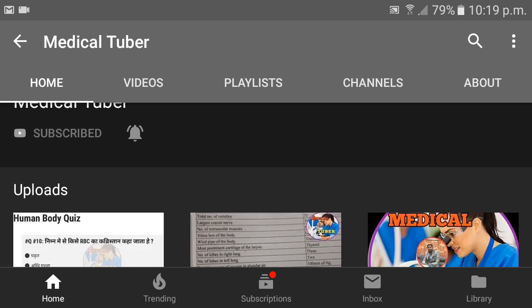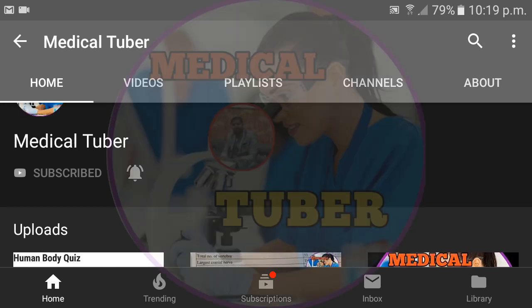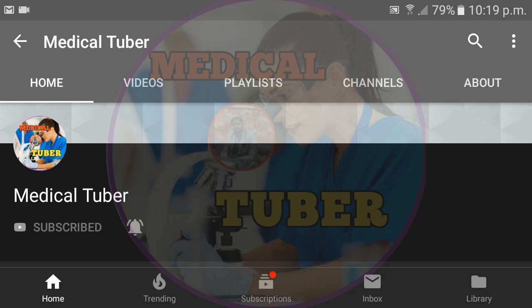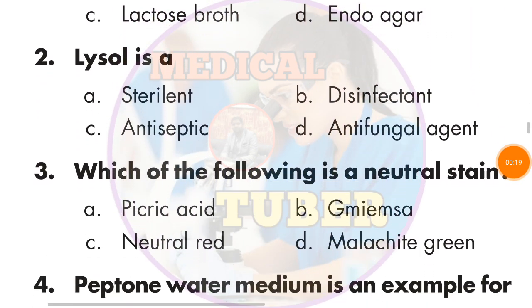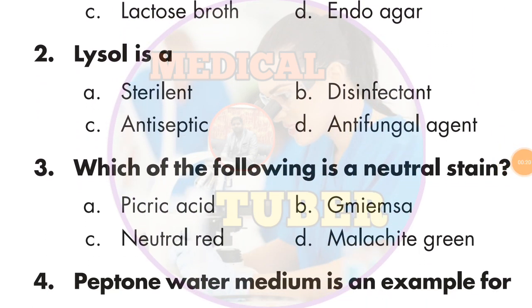Let's start 30 MCQs. Question number 1: The medium used in the membrane filter technique. The answer is B — EMB VP medium.